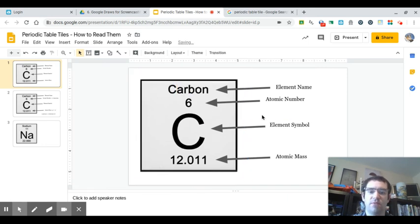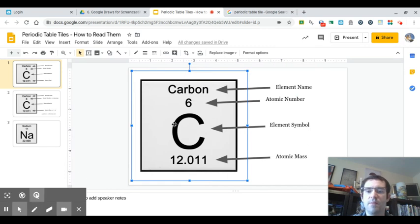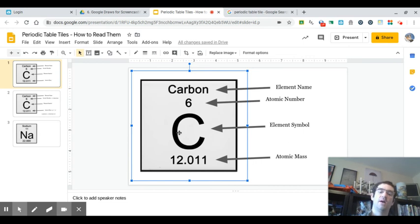So the element name is just the name of the element, so in this case we've got carbon, that's the element name. The symbol is down below, so the letter C stands for carbon.